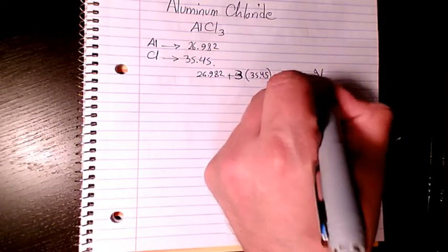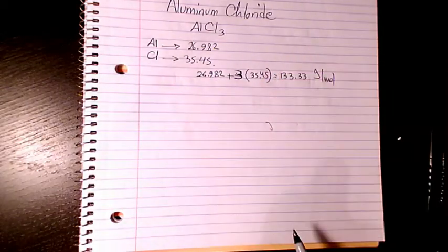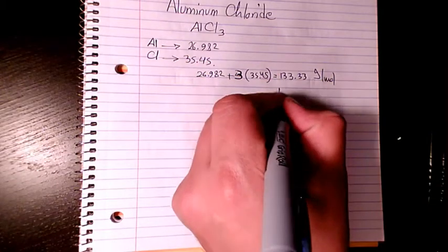That's 133.33 grams per mole. So that's the molecular formula, molecular weight, or molar mass of aluminum chloride.